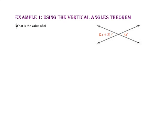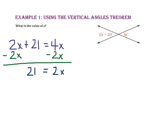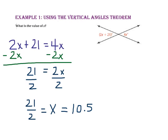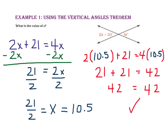In example 1, we're going to use the vertical angles theorem to find the value of x. We know that these two angles are vertical angles, therefore they are congruent. We write the equation 2x + 21 = 4x. Next, we use the subtraction property of equality to subtract 2x from both sides. Then we use the division property of equality and divide both sides by 2. So x equals 21/2, or 10.5. Remember to substitute the value of x, 10.5, in each expression to check your answer. Since 42 equals 42, we know we are correct.